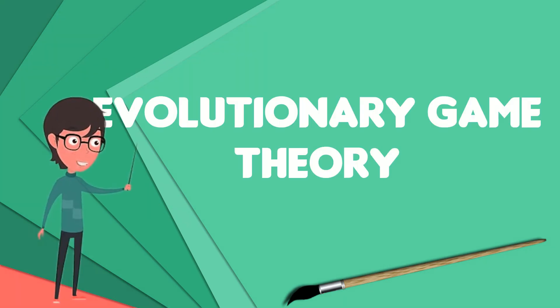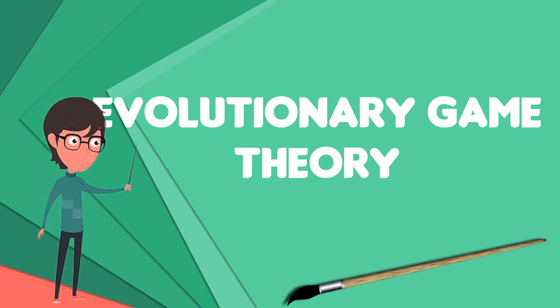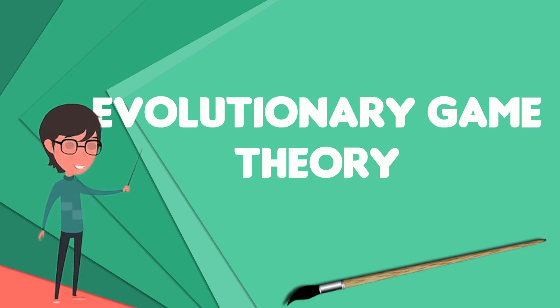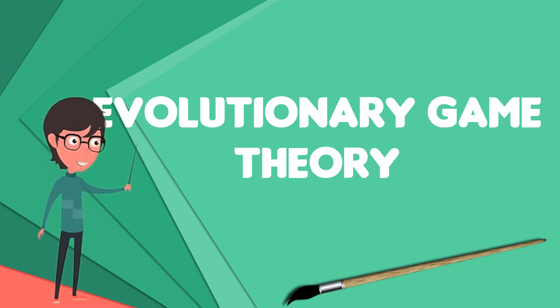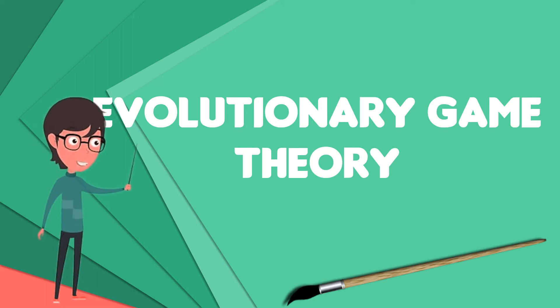Evolutionary Game Theory is the application of game theory to evolving populations in biology. It defines a framework of contests, strategies, and analytics into which Darwinian competition can be modeled.